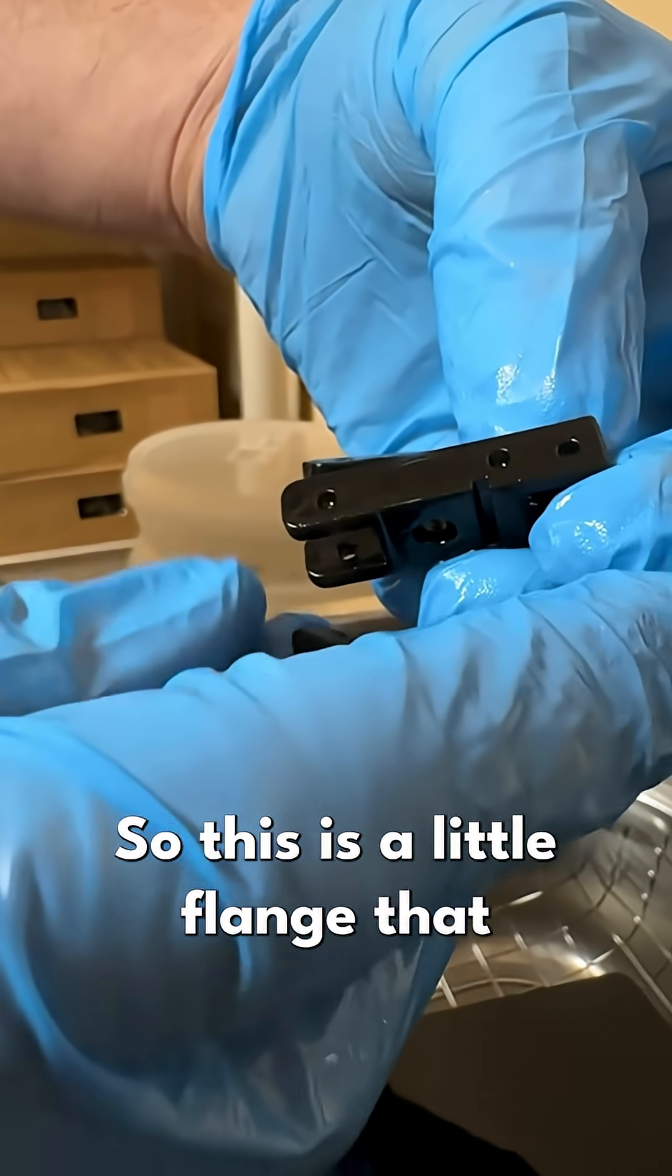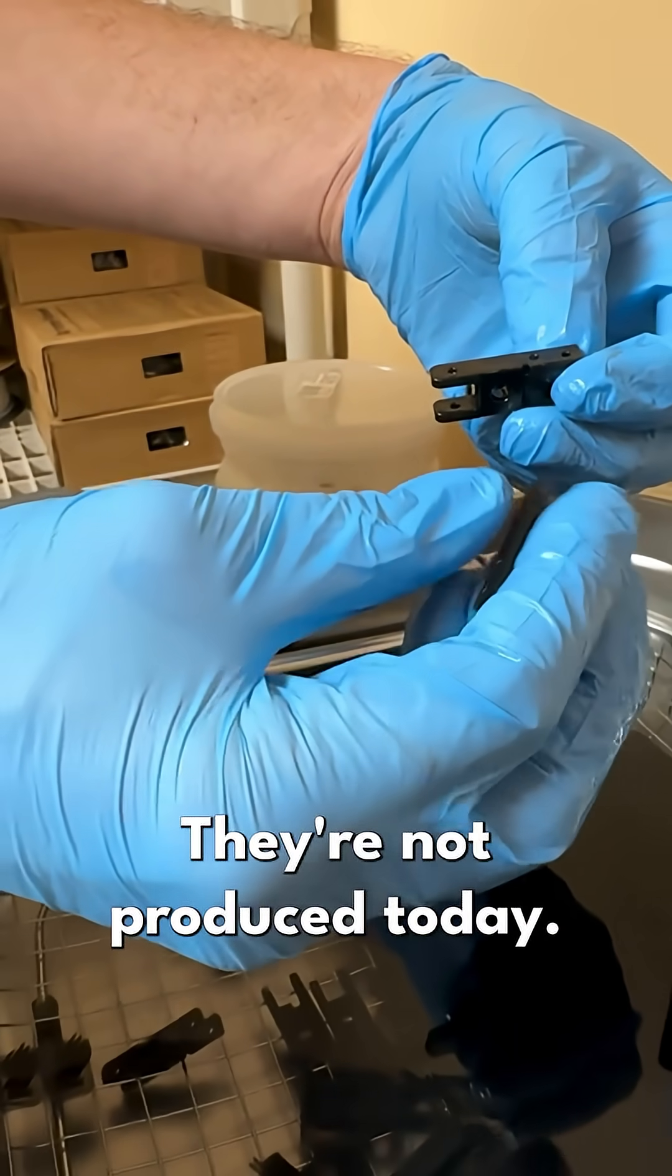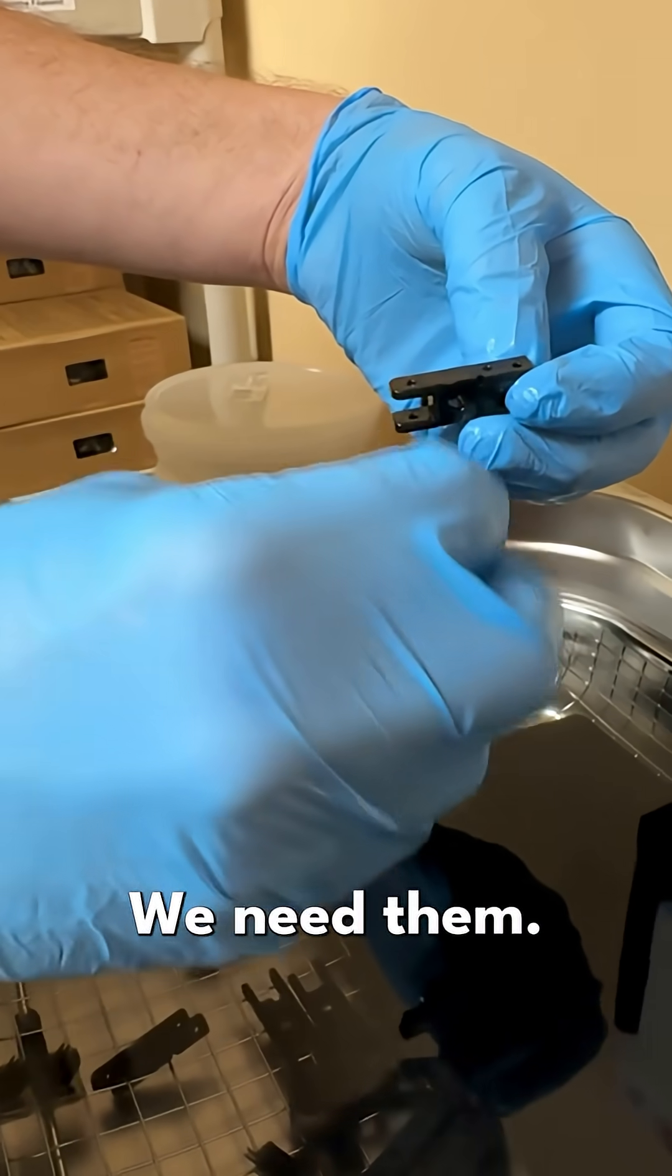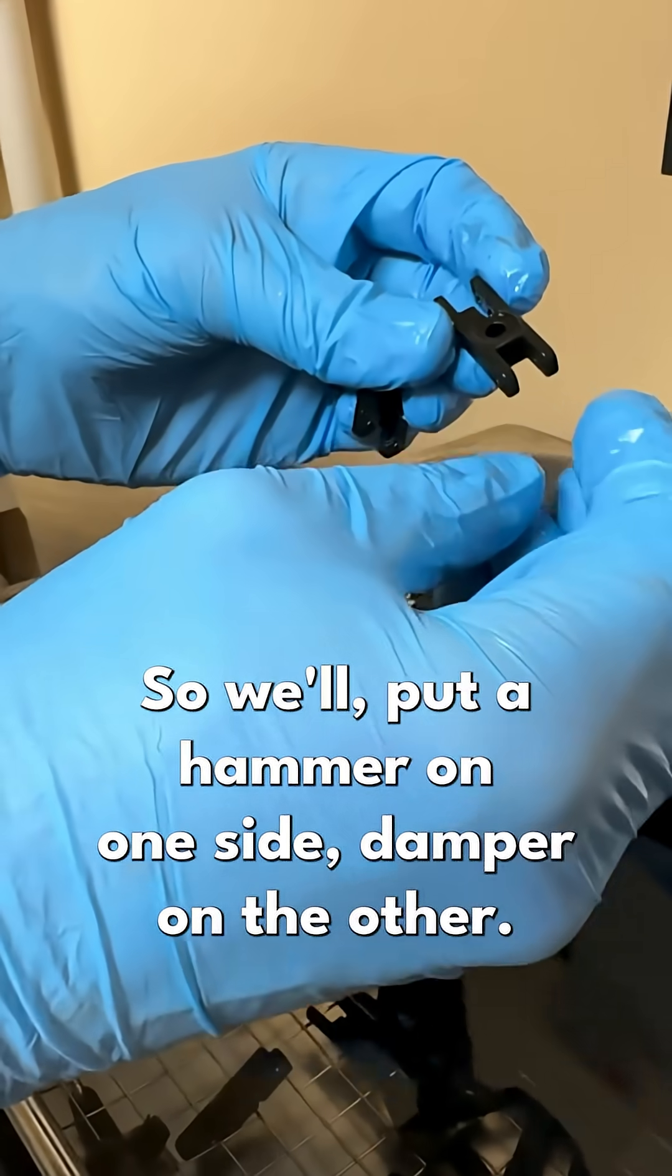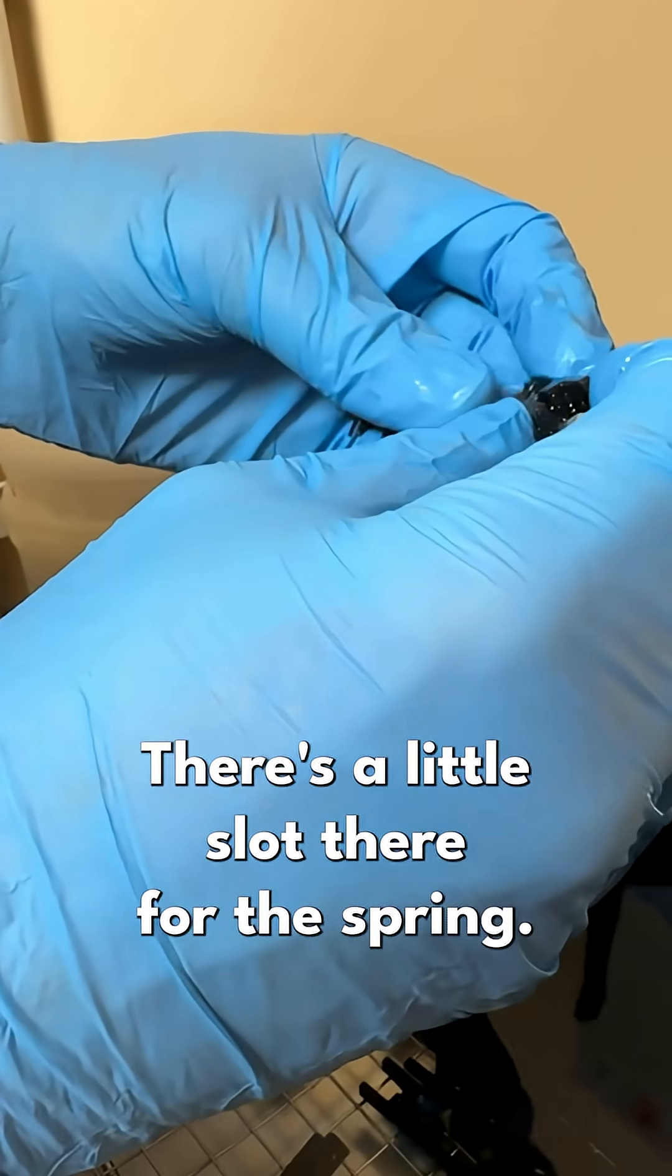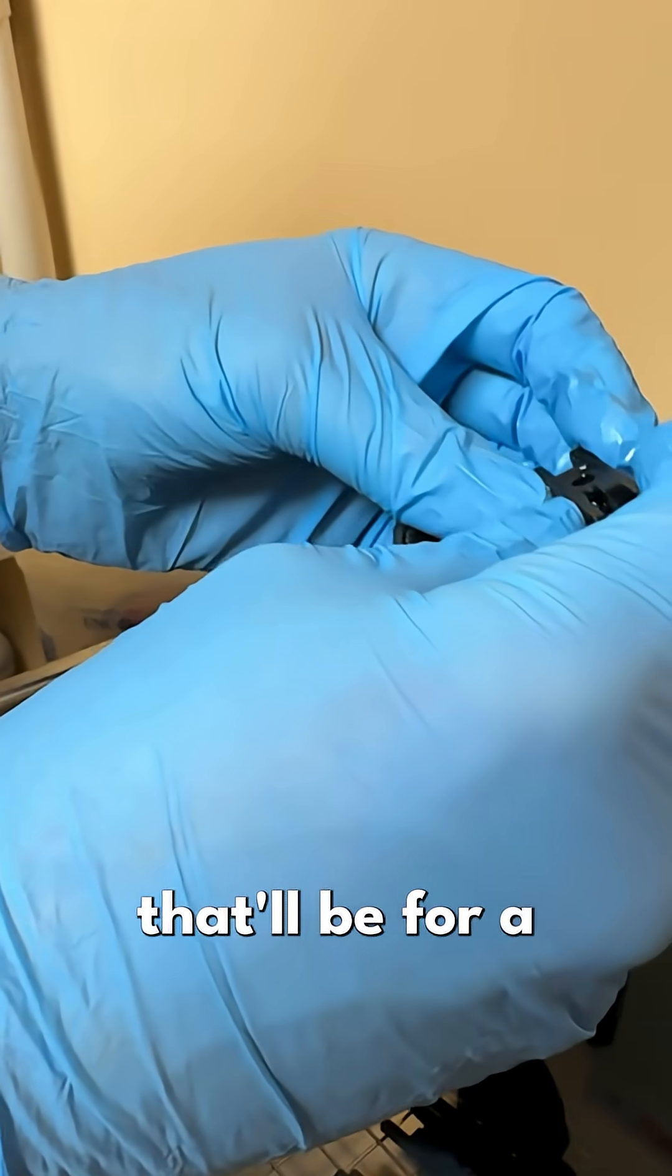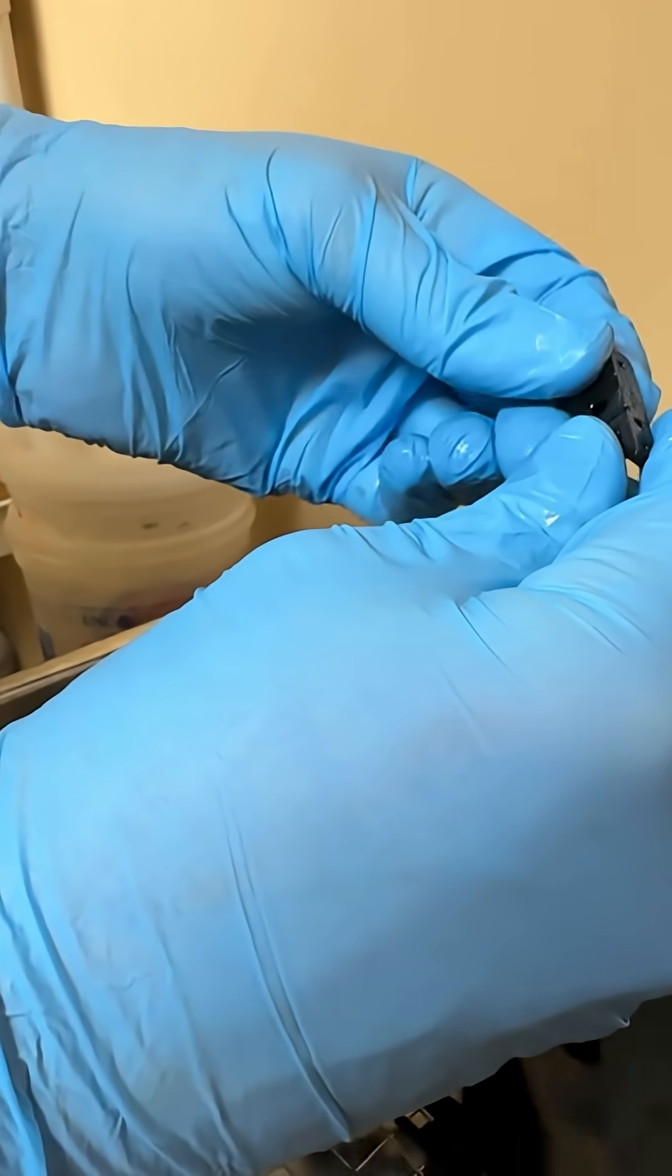So there's a little flange that we can't get. They're not produced today and we need them. So we'll put a hammer on one side, damper on the other. There's a little slot there for the spring. We'll bush these holes. And that'll be good for the next 100 years.